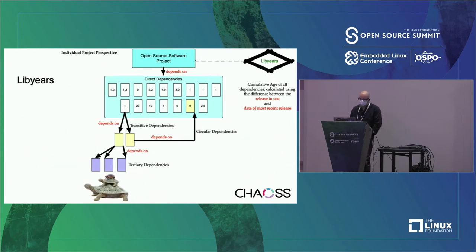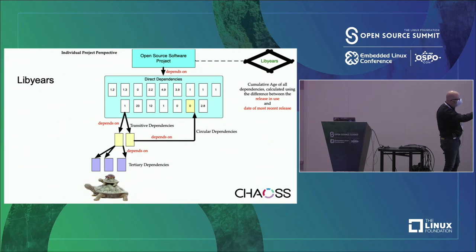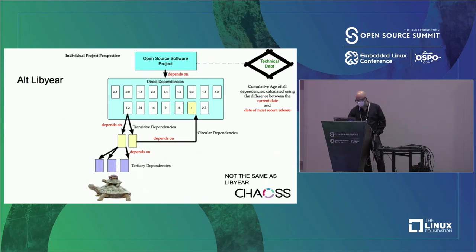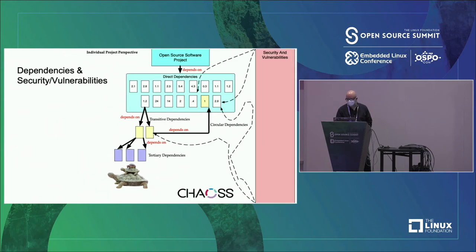For LibYear, what we do is for each primary dependency, we calculate how old it is and produce this cumulative metric — the age of all of them for a project. You can calculate LibYear for direct dependencies only, or include the transitive dependencies; the metric we defined leaves that open to the implementation. There's also an alternative view from some OSPOs: understanding the cumulative age of all dependencies between the current date and the date of the most recent release.